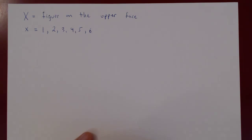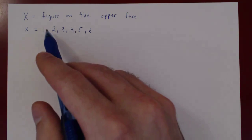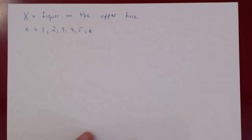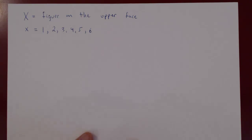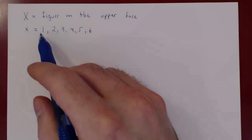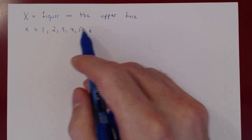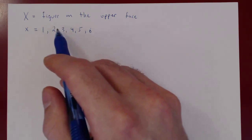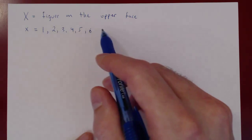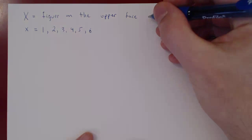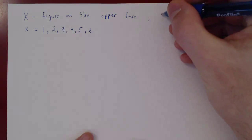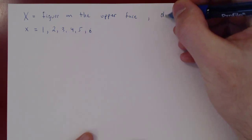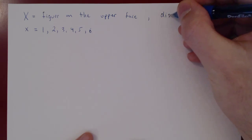X — the figure on the upper face after we've rolled the die — is called a discrete random variable. Discrete means you can actually count all possible values that X can take. Here we can count them: one, two, three, four, five, six. There are only six, so X is called a discrete random variable.